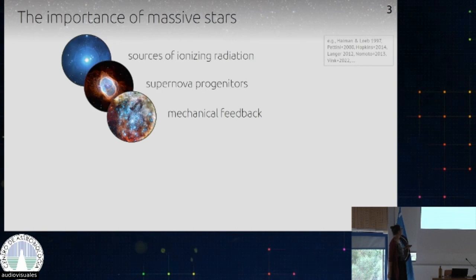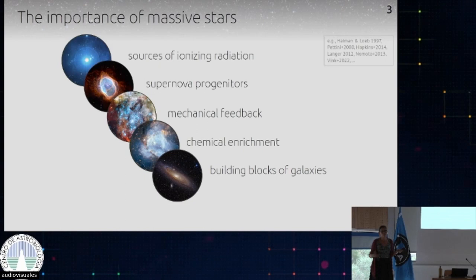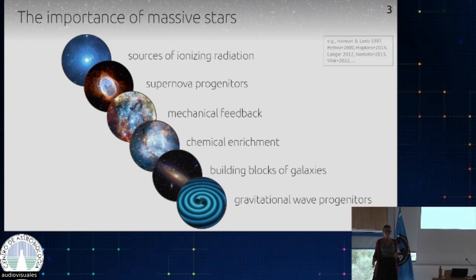They provide feedback with supernovae and winds, and can provide chemical enrichment because they make elements in their cores that are then distributed to their surroundings. If we observe a distant galaxy, what we observe are the brightest stars, which are the massive ones. So if we want to understand galaxies, we need to understand the building blocks they're made from. And since recently we've been observing quite a lot of gravitational wave mergers, which come from massive stars — so to understand those, understanding massive stars is important.